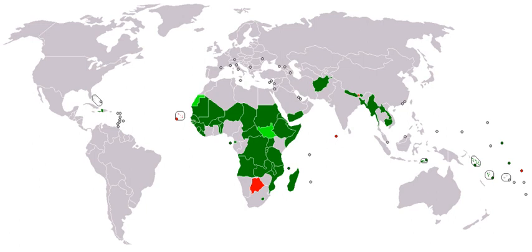The term 'Global South' began to be used more widely since about 2004. It can also include poorer southern regions of wealthy northern countries. The Global South refers to these countries' interconnected histories of colonialism, neo-imperialism, and differential economic and social change through which large inequalities in living standards, life expectancy, and access to resources are maintained.